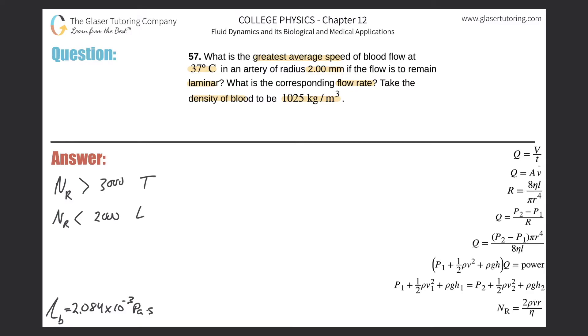The question is asking us that the flow has to remain laminar, and we want to find the greatest average speed. So first I know I'm going to be dealing with this Reynolds number equation.